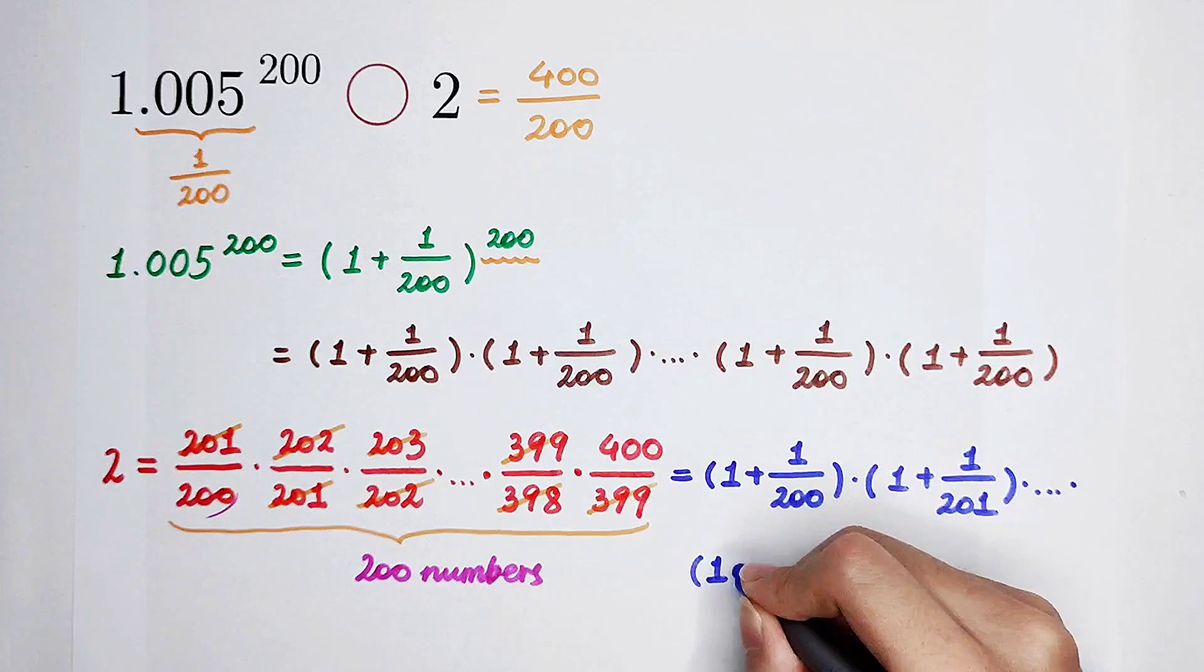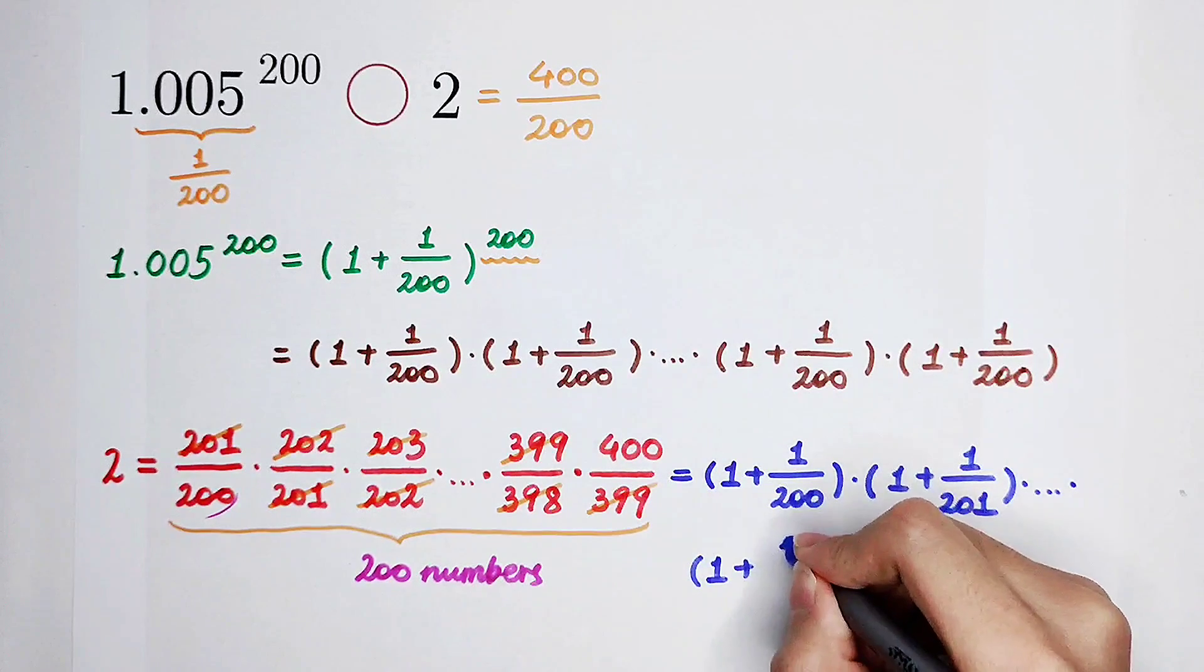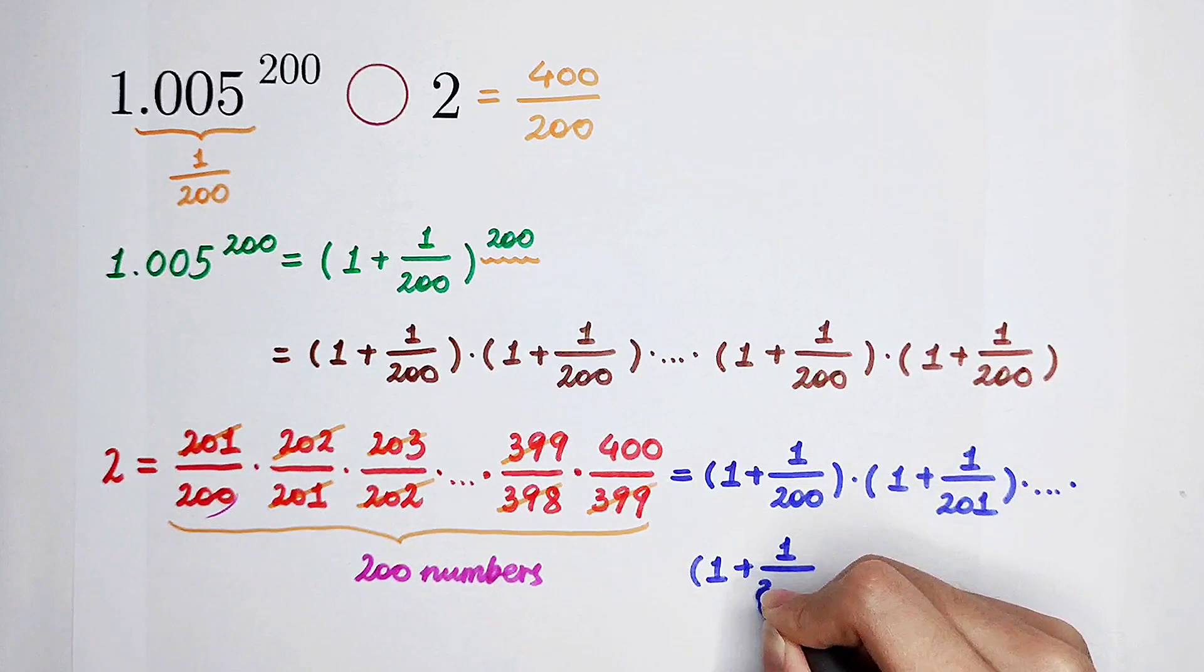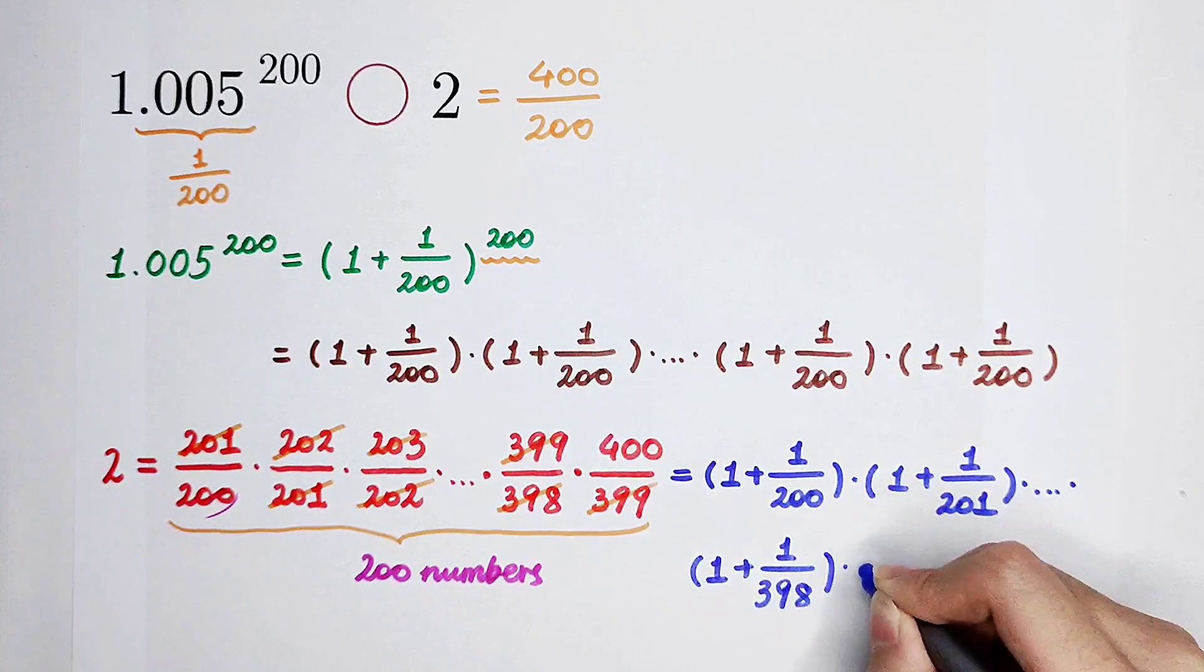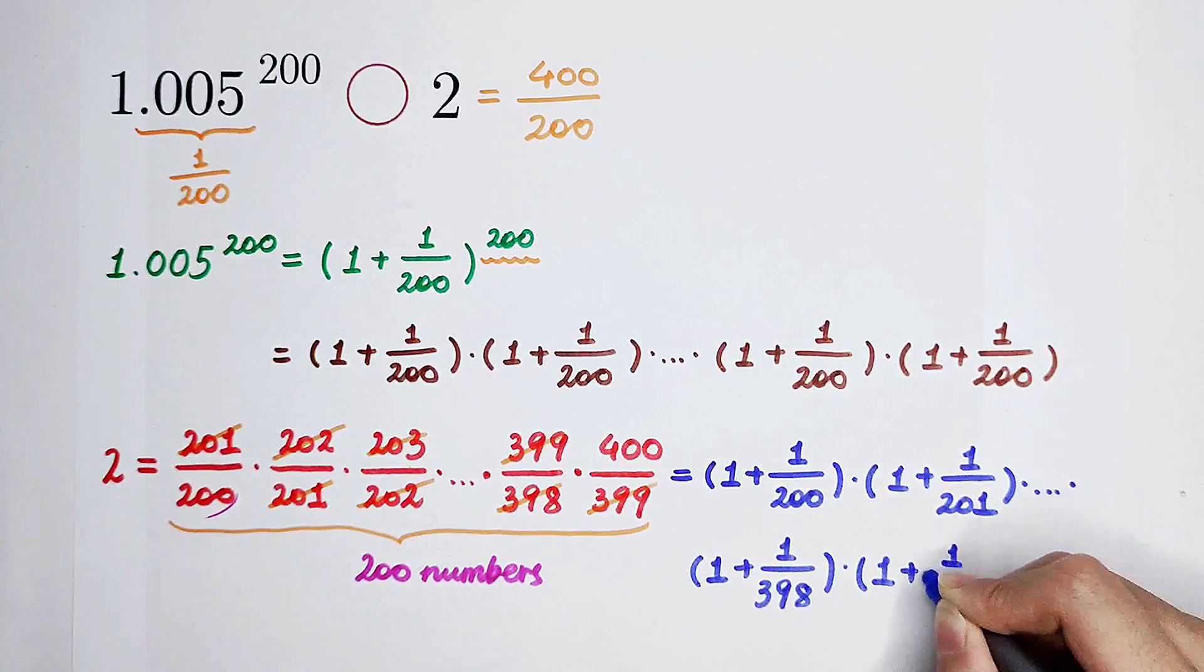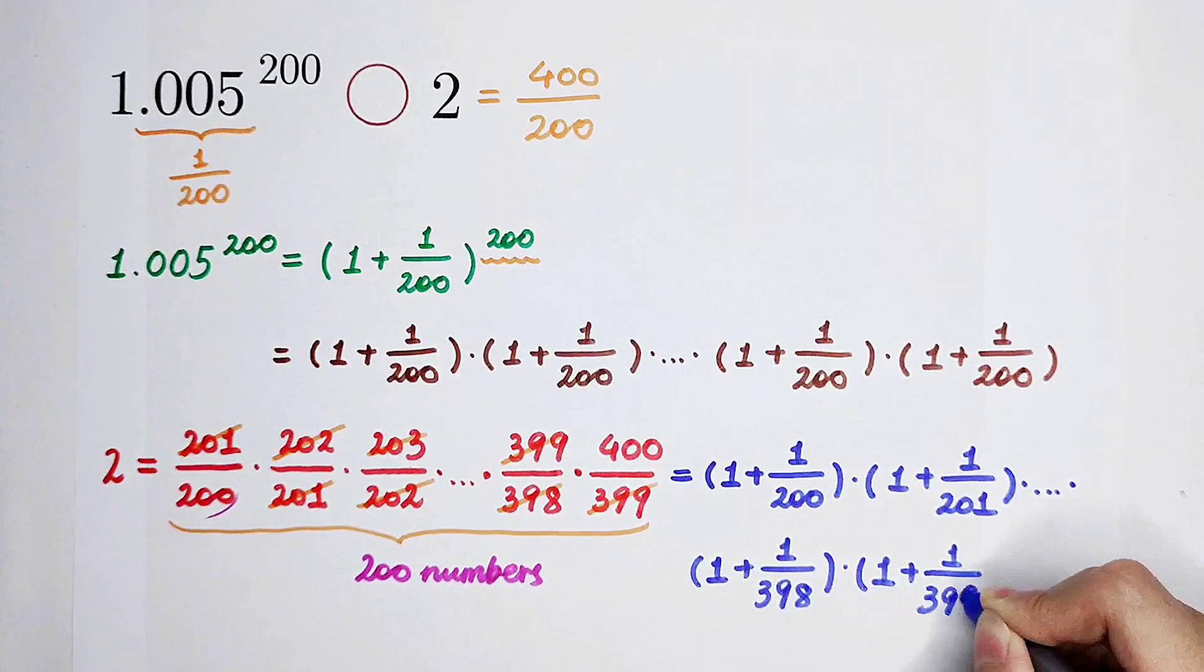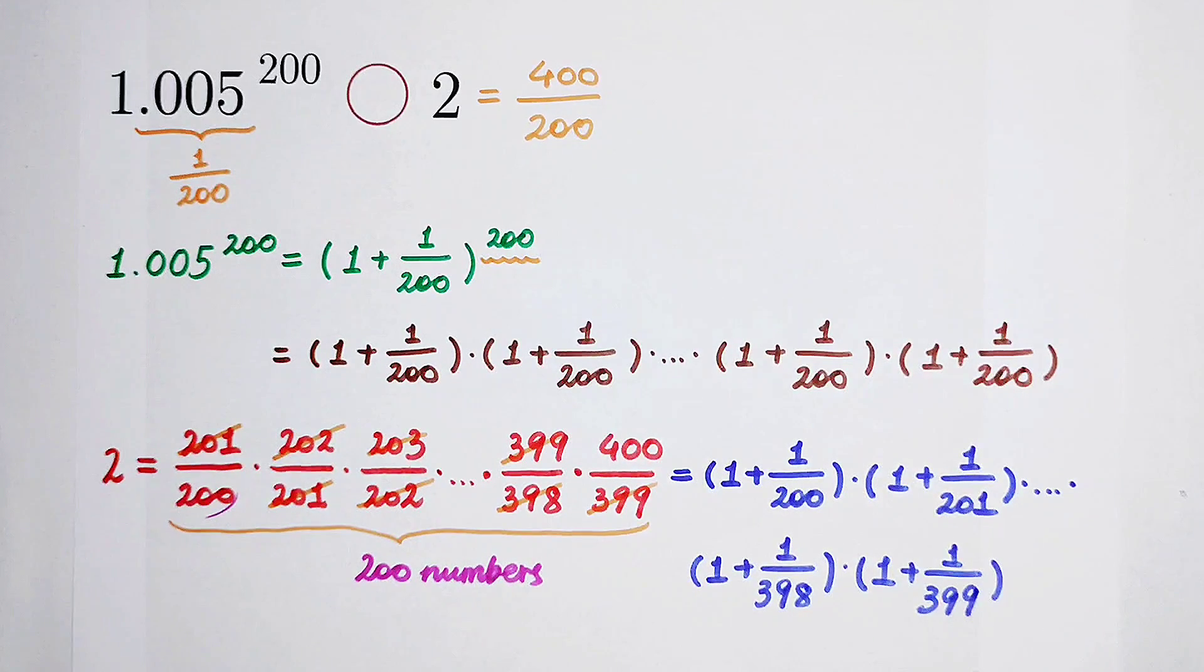Until 1 plus 1 over 398. And then times 1 plus 1 over 399. Very good.